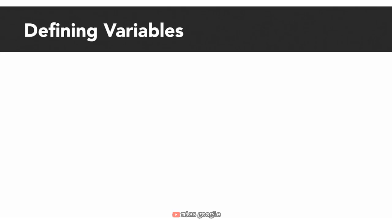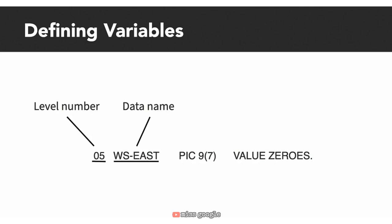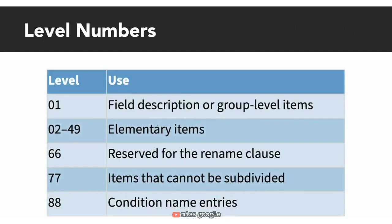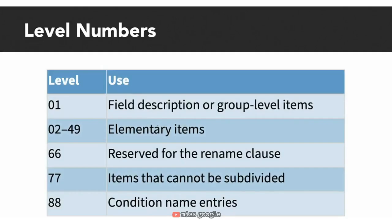In COBOL, variables are defined with a level number such as 01, 05, 10, etc., a data name such as WS-Item-1, a picture clause such as PIC 999, and an optional value clause such as VALUE SPACES. Level 01 is for field description entries and group level items. Levels 02 to 49 represent elementary items. Level 66 is reserved for the rename clause. Level 77 is for items that cannot be subdivided. Level 88 is used for condition name entries. We'll see additional examples of all of these throughout the course.